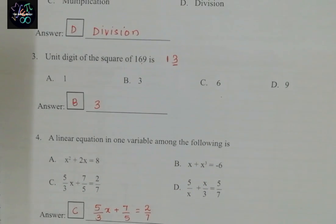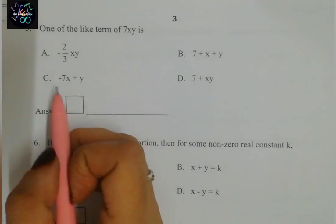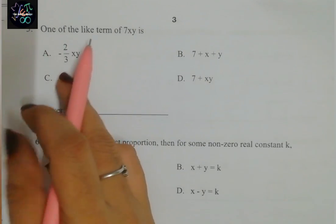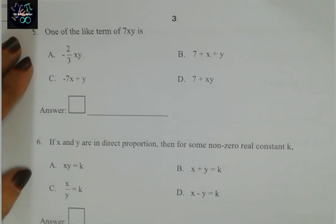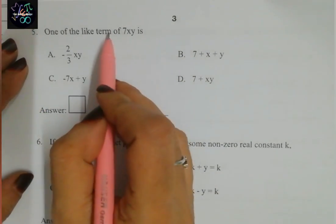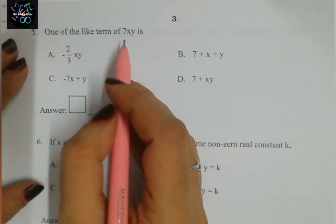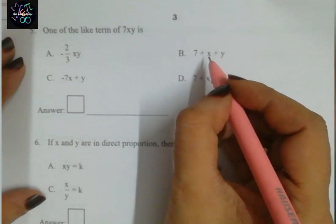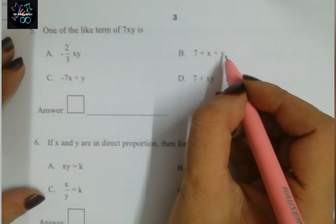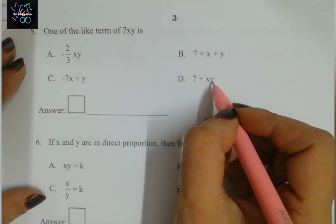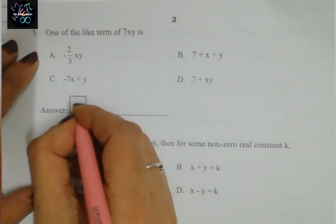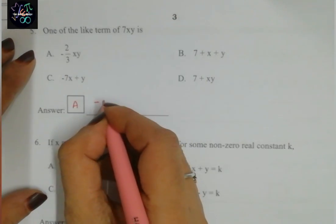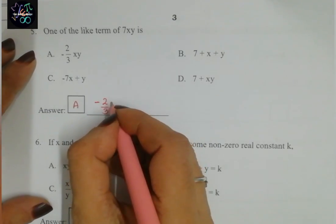Question 5: one of the like terms of 7xy. We need to find which option is a like term of 7xy — that is, it must contain the same variables xy. Looking at the options, only option A has xy, so the correct answer is A: −2/3 xy.